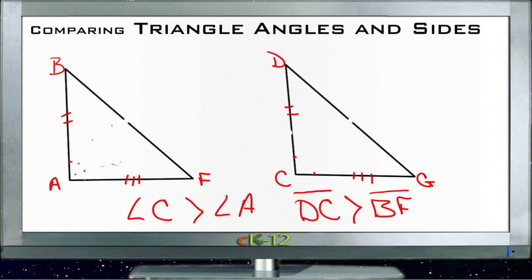It also works the other way. If C was smaller than A, then BF would be greater than DG. The rule that says if the angle is greater, the side is greater, is called the SAS inequality theorem.